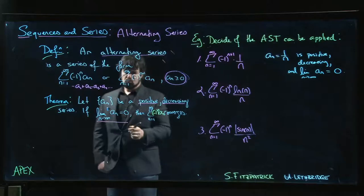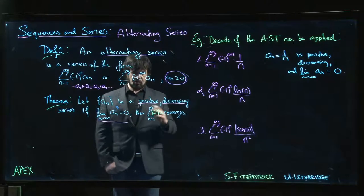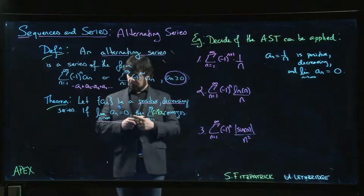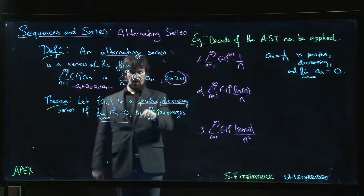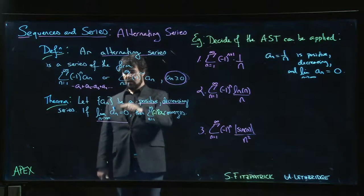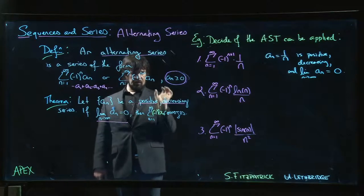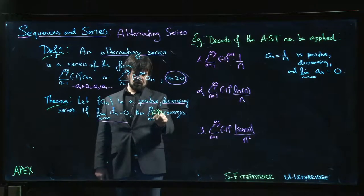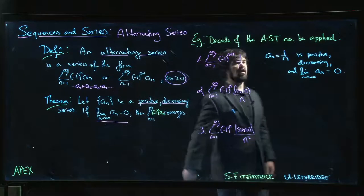This is the interesting thing about alternating series test: you're just checking boxes. There's hypotheses and a conclusion. There are three things in the hypothesis: sequence is positive, sequence is decreasing, sequence has zero for the limit. If you can check those three boxes, your sequence converges.